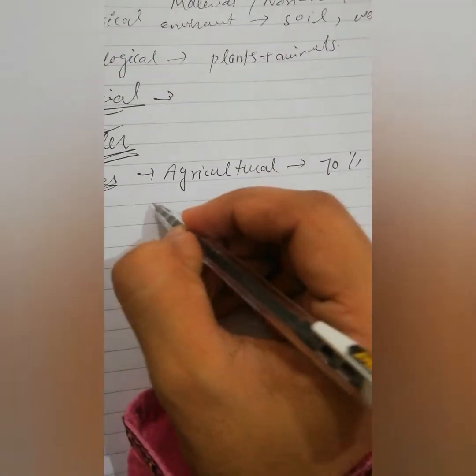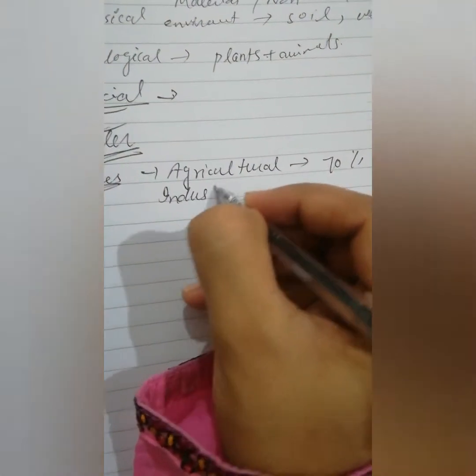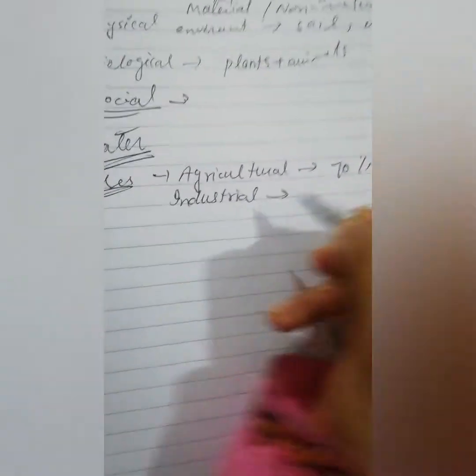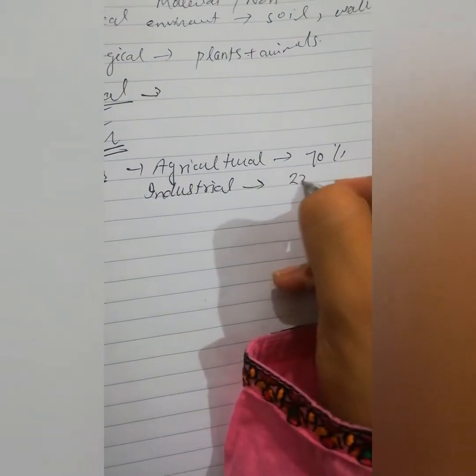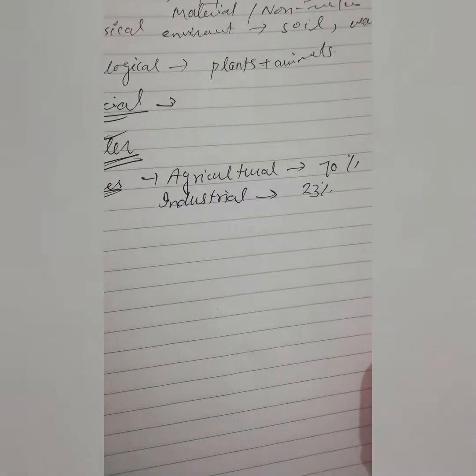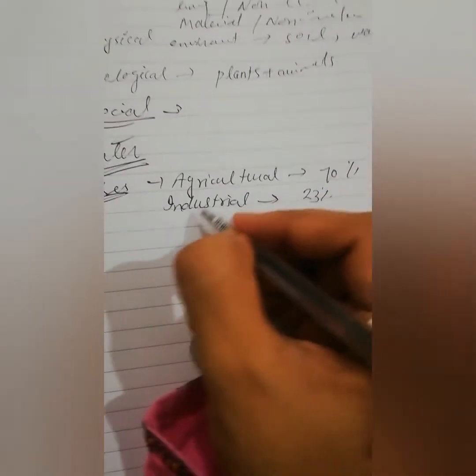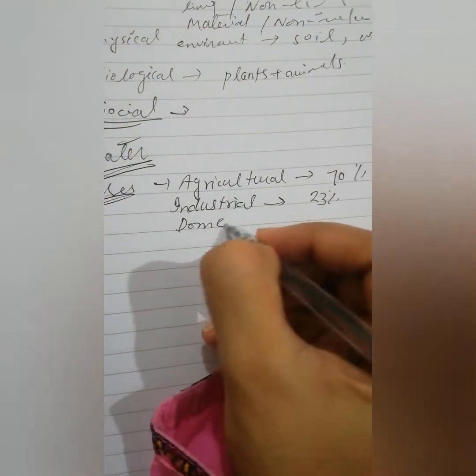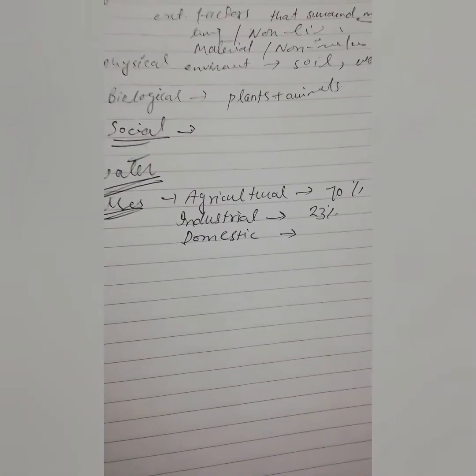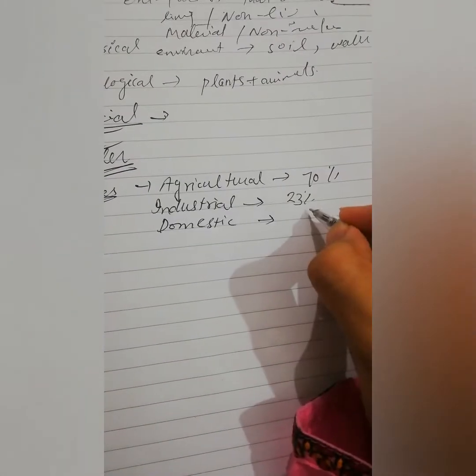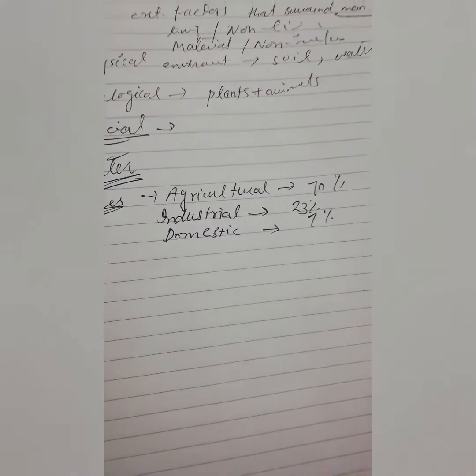The second important use of water is industrial. In industry, almost 23% of water is used. Then we have domestic use of water — this includes cooking, drinking, washing, and bathing. Domestic use accounts for about 7% of water use.